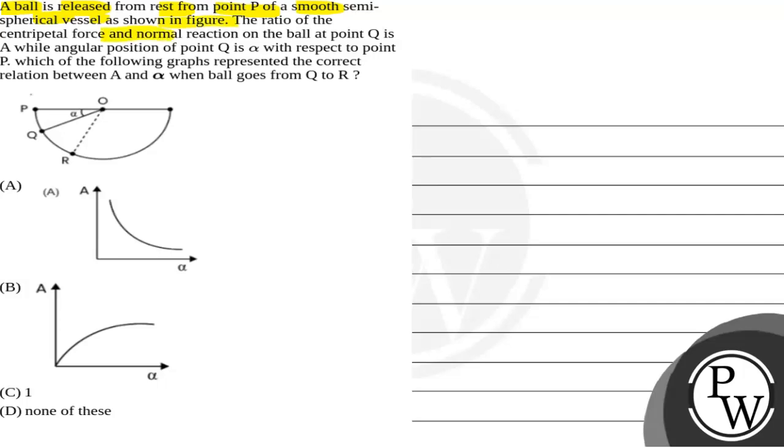The ratio of centripetal force and normal reaction on the ball at point Q is A, while angular position of point Q is alpha with respect to point P. Which of the following graphs represent the correct relation between A and alpha when the ball goes from Q to R?